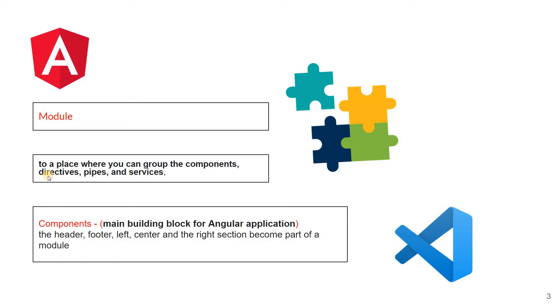A module is a place where you can group components, directives, pipes, and services. We'll talk about directives, pipes, and services in coming videos, but for now think of a module as the place where you group components. Components are the building blocks of your application.